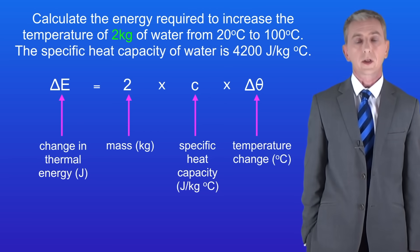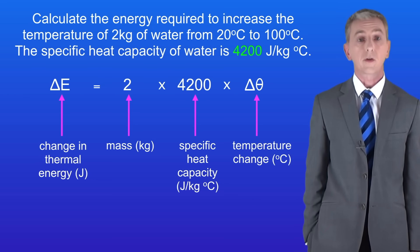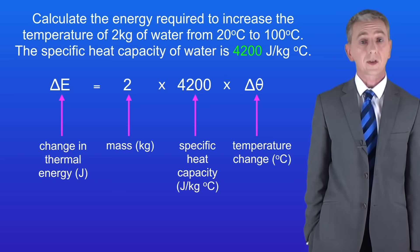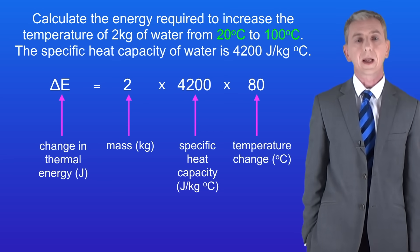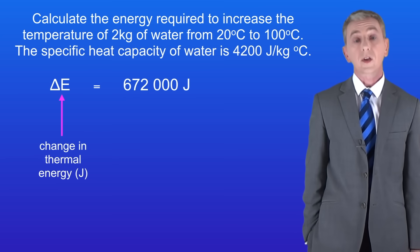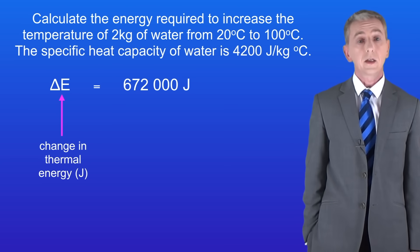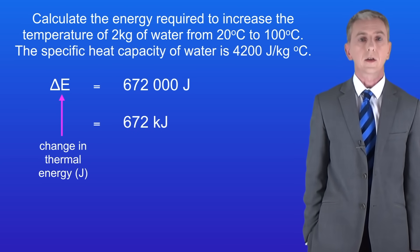We've got two kilograms of water. The specific heat capacity of water is 4200 joules per kilogram per degree Celsius — you will be given that value in the exam — and the temperature change in this case is 80 degrees Celsius. Putting these values into the equation gives us a total change in thermal energy of 672,000 joules. We can convert that to kilojoules by dividing by 1,000, giving us 672 kilojoules.